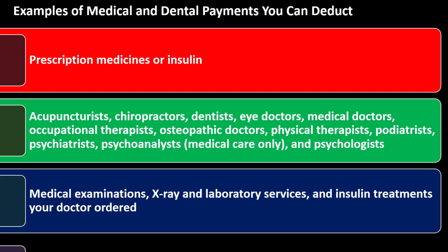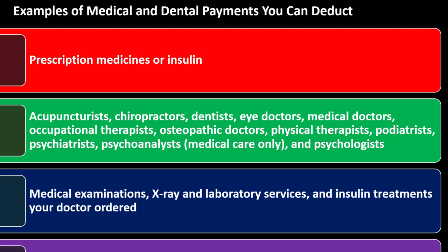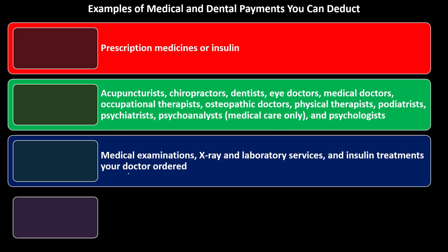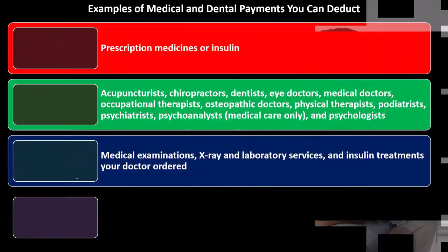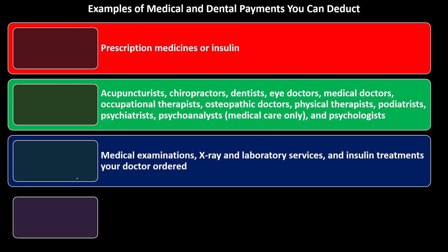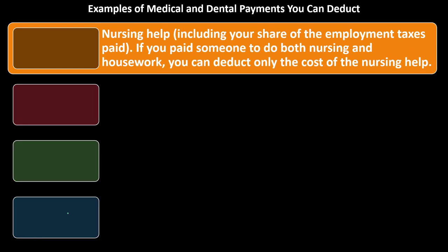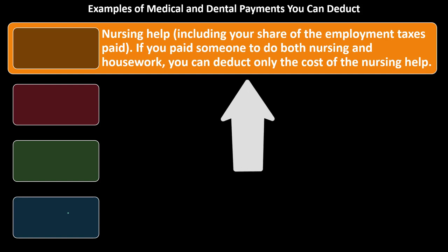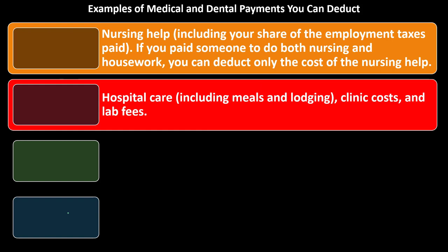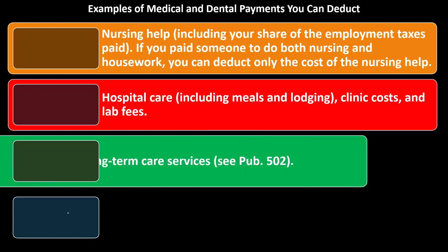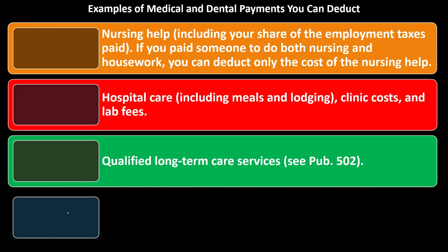Deductible items also include medical examinations, X-rays, laboratory services, insulin treatments, and doctor-ordered items. Doctor-ordered items are where you can get into some unusual areas — when a doctor orders something that might seem like it would be beneficial beyond the medical recommendation. Diagnostic tests such as a full body scan, pregnancy test, or blood sugar test kit are deductible. Nursing help is deductible, including your share of employment taxes paid. If you paid someone to do both nursing and housework, you can deduct only the cost of nursing help. Hospital care including meals and lodging, clinic costs and lab fees, and qualified long-term care services are also deductible — see Publication 502 for more detail.